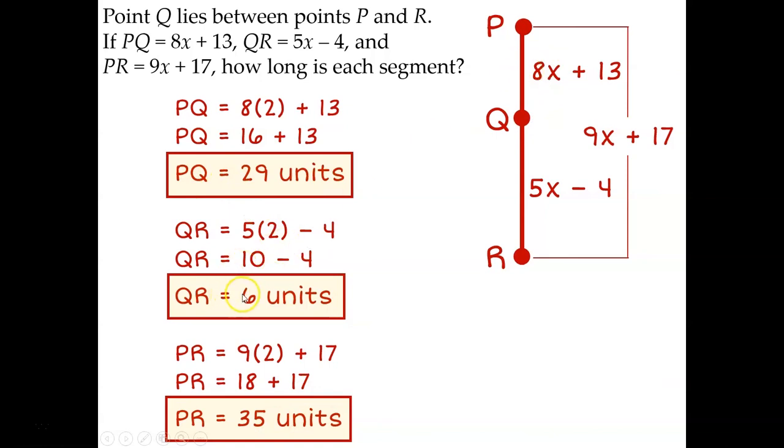PQ is this little part, QR is this little part, and PR is the whole thing. So I can double check my answer, not by looking at my diagram, but by looking at my final answers. Is 29 plus 6 equal to 35? Yeah, it is. So I must have done this correctly.